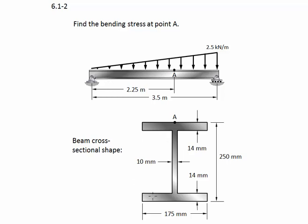We're also given the cross-sectional shape. It's an I shape. The dimensions are given and we see that A is right at the top of the shape. Let's do this problem.